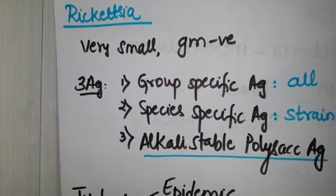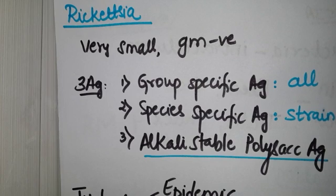Rickettsia are very small and gram negative by their property. Apart from the property, they have three types of antigens: one is the group specific antigen which is there in all the Rickettsia.